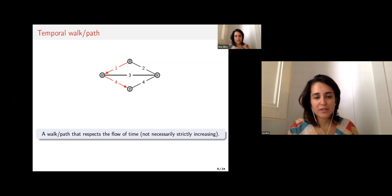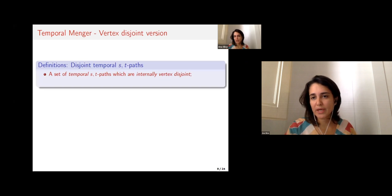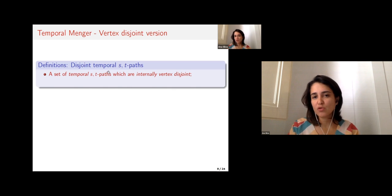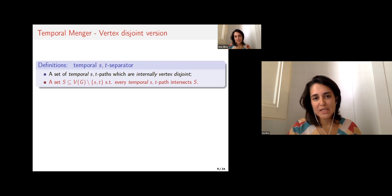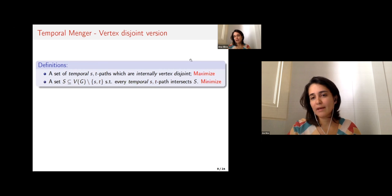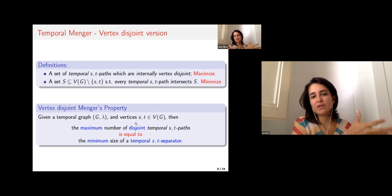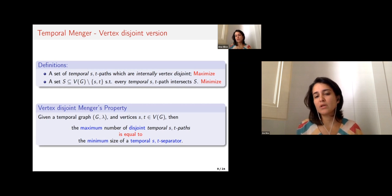Given this definition, we can do a direct translation of Menger's concepts to the temporal setting, substituting classical ST paths with temporal ST paths. A set of temporal ST paths is vertex-disjoint if they do not share any vertex of the underlying graph. Similarly, a separator is a subset separating s from t. We can maximize disjoint paths and minimize the separator, and call this the vertex-disjoint Menger's property — the direct translation of Menger's theorem.